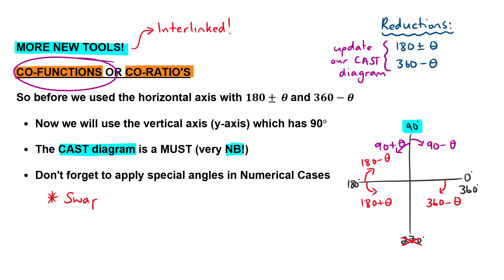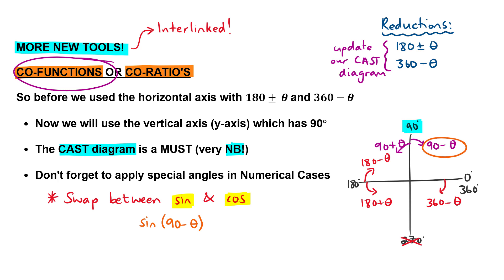A co-function is different in the sense that it is a swap between sine and cos. When we use one of these co-functions, sine will become cos or cos will become sine. For example, if I gave you sine and then used the co-function of 90 minus theta, we drop the reduction and write out the angle, but because we are swapping between sine and cos our answer will be cos of theta.